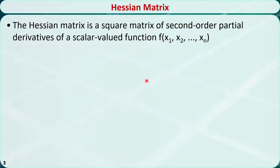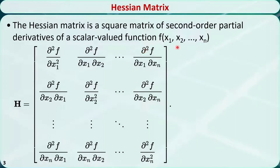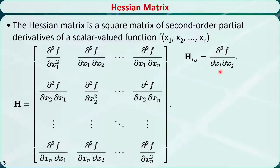The Hessian matrix is the square matrix of the second-order partial derivatives of a function. For an n-variable function f of x1, x2 through xn, its Hessian matrix is n rows by n columns. For the element in the i-th row and j-th column, its value is the second-order partial derivative of f with respect to xi and xj.